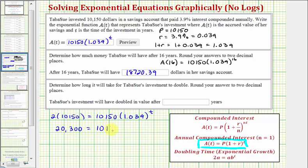So 20,300 equals 10,150 times 1.039 raised to the power of T. We're going to go ahead and leave it in this form and solve this equation graphically.